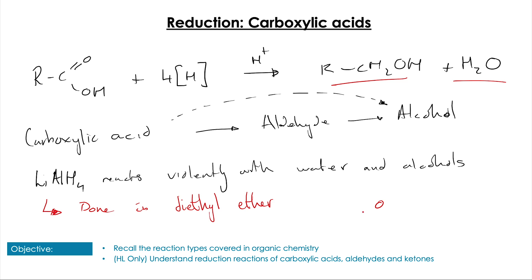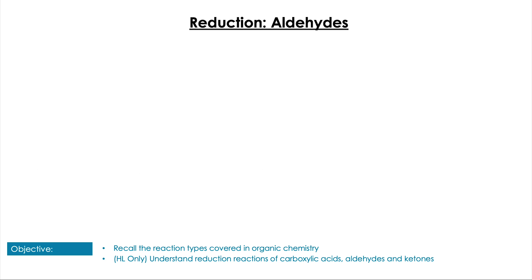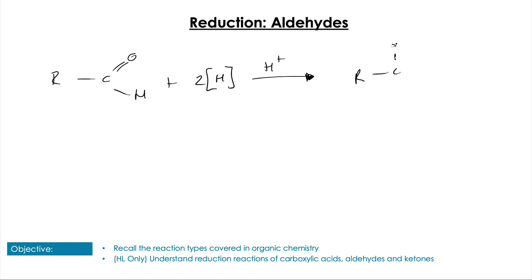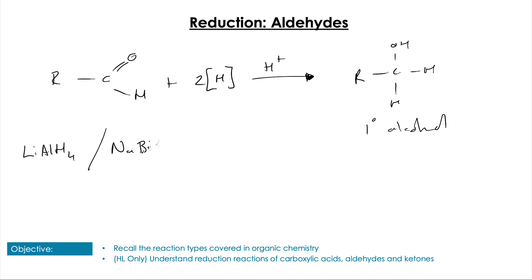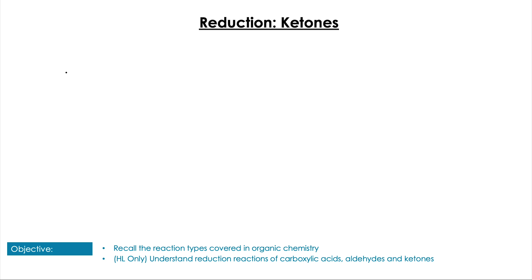That stops the reaction from being explosive, although it's still a rather dangerous reaction. Aldehydes operate in a similar way, except we only need half as much of our reducing agent. We're also able to use sodium tetrahydroborate as we don't need as strong a reducing agent for this reaction, still producing the primary alcohol as before. For ketones, remember we have two R groups — we're only going to need two moles of reducing agent to form our secondary alcohol.